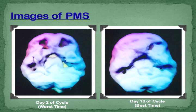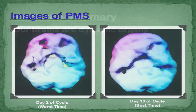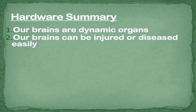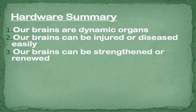We used to think you killed a brain cell and it was dead forever. But our brain is very dynamic — it changes a lot, even from day to day, week to week. To summarize our hardware: our brains are very dynamic organs; they can be injured easily and diseased, but they can also be strengthened or renewed. The Bible talks about renewing the mind — and that renewing is spiritual, psychological, but also physiological, as we're going to show.